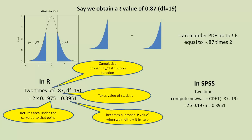In SPSS, we do the same thing using CDF.T, where the dot specifies which distribution to use — t in this instance. We multiply by 2 and get exactly the same value as in R.